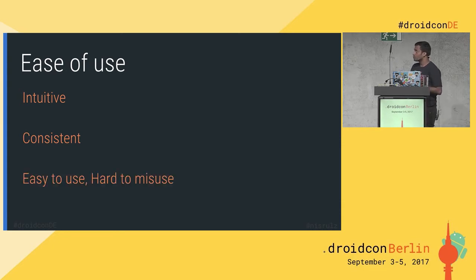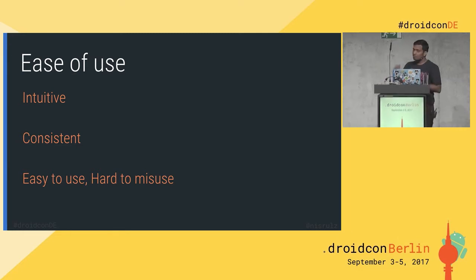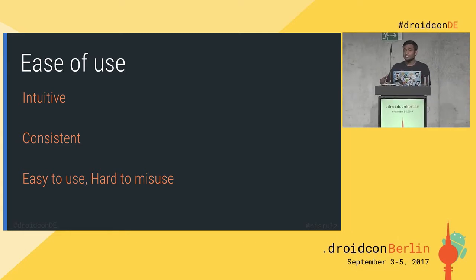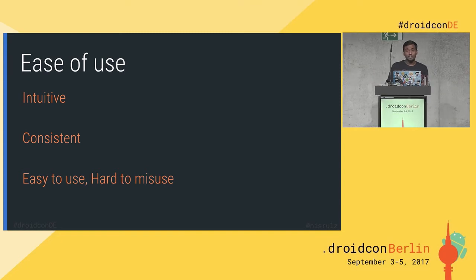The last rule is that it should be easy to use and hard to misuse. You need to think from the perspective of a library developer versus an Android app developer. A library developer needs to make sure it's very easy for the app developer to use the library code, but also has the responsibility to make sure that even if the app developer tries to misuse it, they can't — because you put in validation checks for all the different scenarios that might exist.